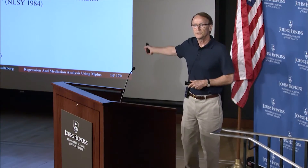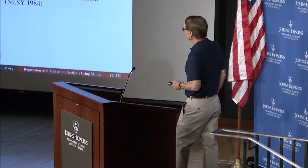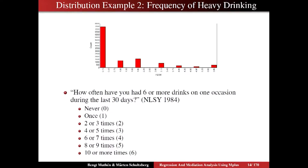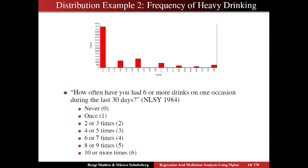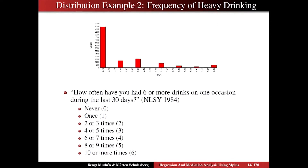What about count modeling here? There are two problems. Standard count models don't have the feature of probability first going down and then coming back up — that non-monotonic pattern is not part of standard count modeling. It could be handled via a mixture model with latent class analysis. Furthermore, you have categorized counts — 'two or three times,' 'four or five times' — and categorized counts cannot be assumed to follow count model assumptions. So I would go with ordinal variable regression here.